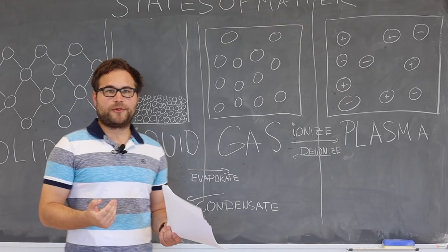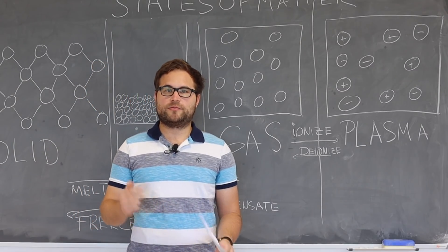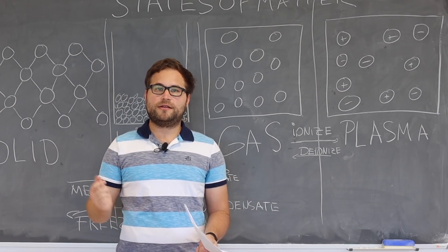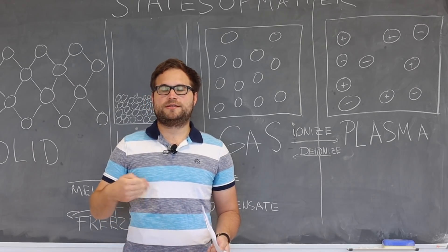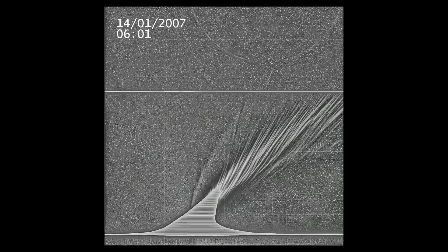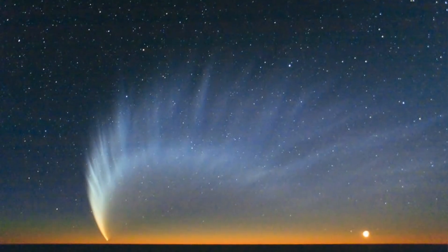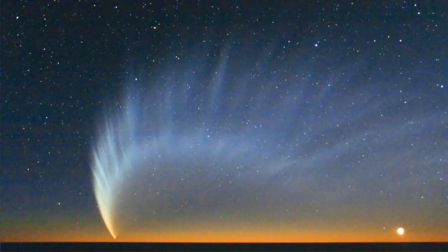Another example are comets which circle the sun. If the comet comes close to the sun, it's heated up so much that its icy content sublimates and immediately forms a gas which is visible as a tail in the night sky.